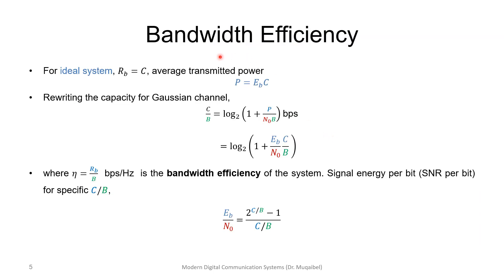Instead of representing capacity directly, we can look at bandwidth efficiency by dividing by bandwidth B. Consider the ideal case where the bit rate Rb equals capacity C — this is ideal because capacity is the maximum transmission rate. If we transmit at Rb equal to C we have an ideal system. Recall that power equals energy divided by time, or energy multiplied by rate, so under this ideal condition P = Eb × C.